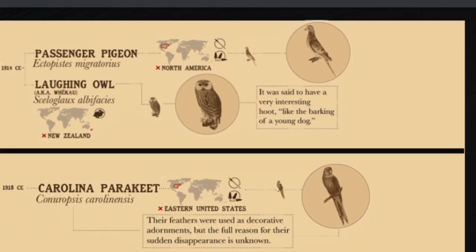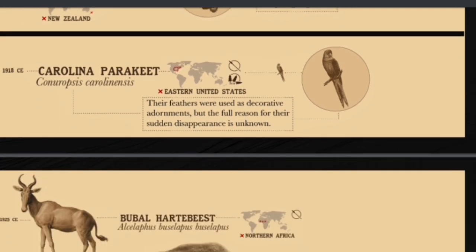In 1914, two species of birds went extinct. The passenger pigeon — when they passed by migrating, the whole sky would turn black due to their large numbers — went extinct mostly due to hunting. The laughing owl also went extinct due to invasive species; it was said to have a very interesting hoot, like the barking of a young dog. In 1918, the Carolina parakeet went extinct — their feathers were used as decorative adornments, though the full reason for their sudden disappearance is unknown, but it is attributed to hunting and destruction of habitat.